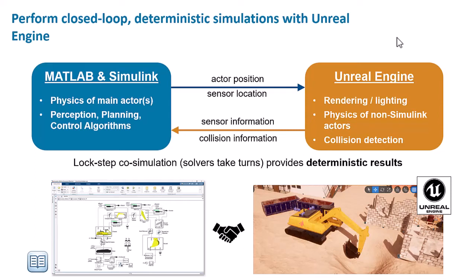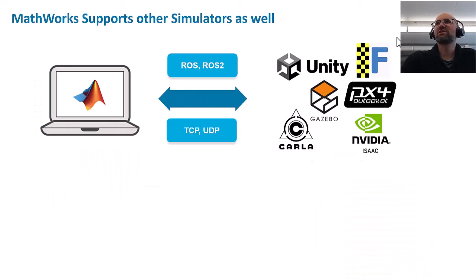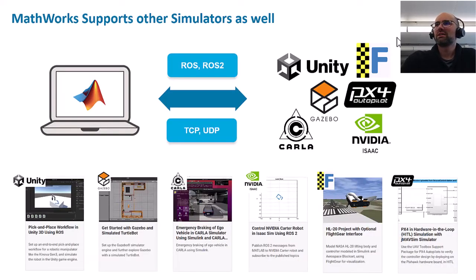This is a lockstep co-simulation, which is a big advantage. Solvers take turns, so it's deterministic — if you rerun the simulation you will always get the same results and you don't run into issues with communication delays. However, if you have another environment that isn't Unreal, we also support other simulators. You can use ROS, ROS2, or TCP/UDP connectors to connect to pretty much anything out there — Unity, Carla, Isaac Gym — and there's a broad range of reference examples to help you get started.